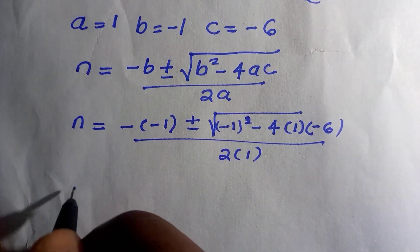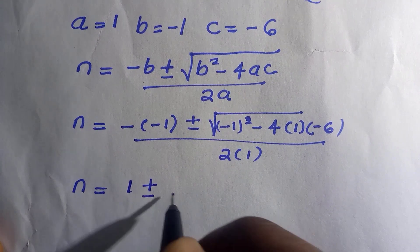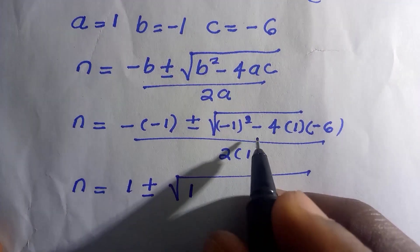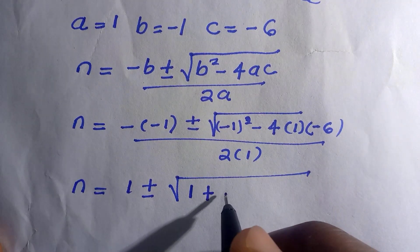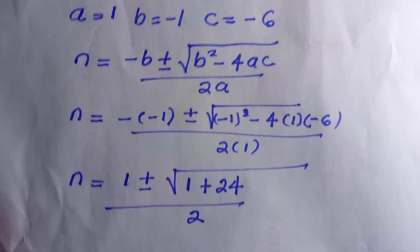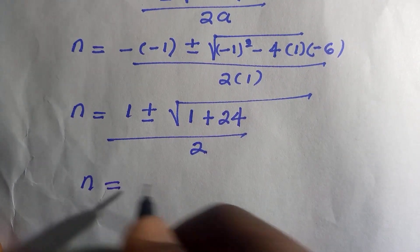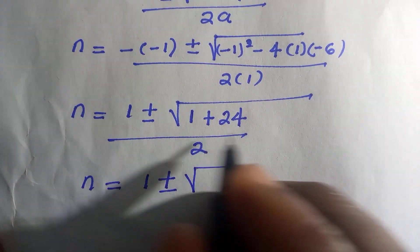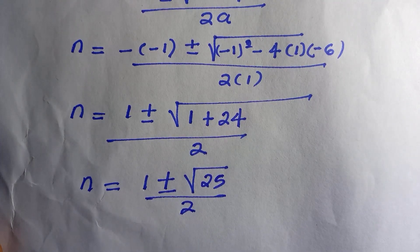Let's evaluate this. Negative of negative one is positive one. Negative one squared is one. Minus four times one times negative six — negative times negative is positive — so that gives plus twenty-four. All divided by two. So we have n equals one plus or minus the square root of one plus twenty-four, which is twenty-five, divided by two.